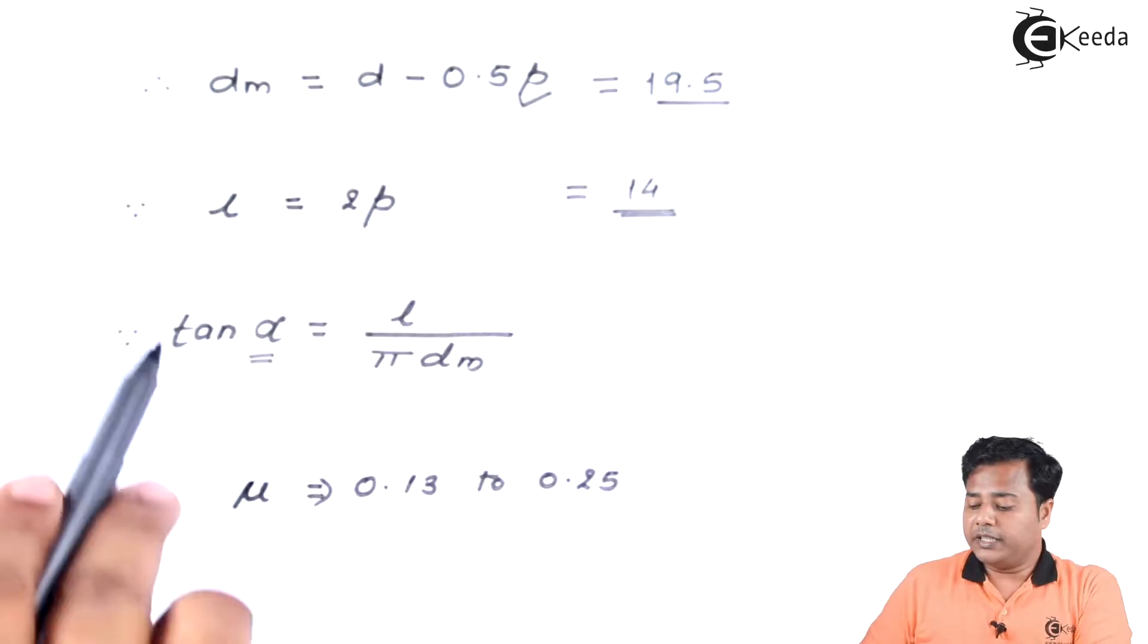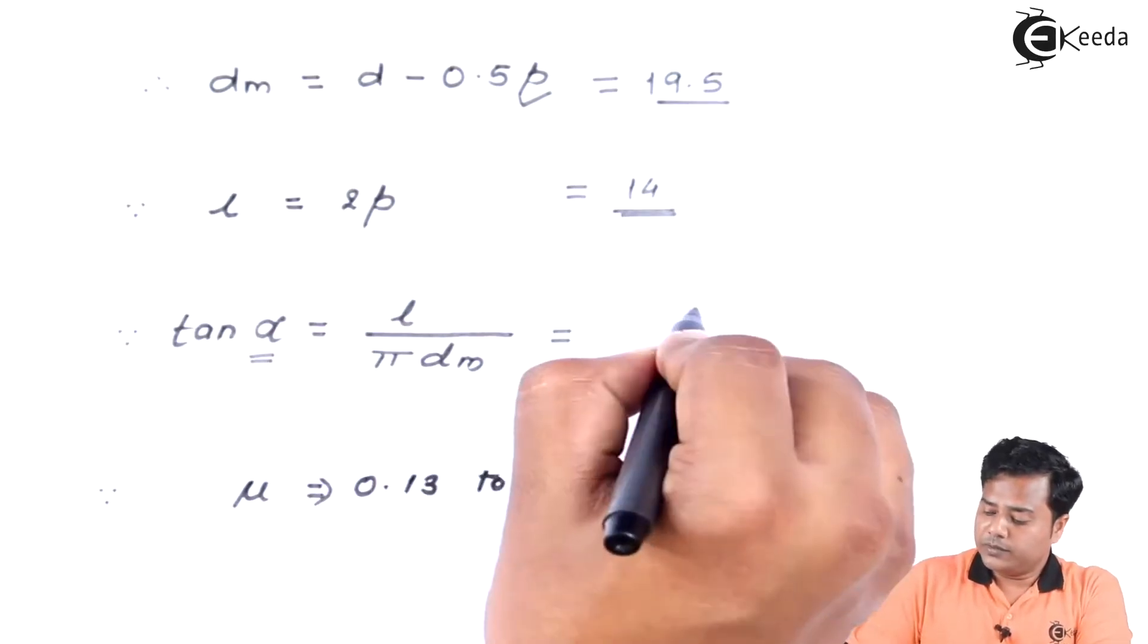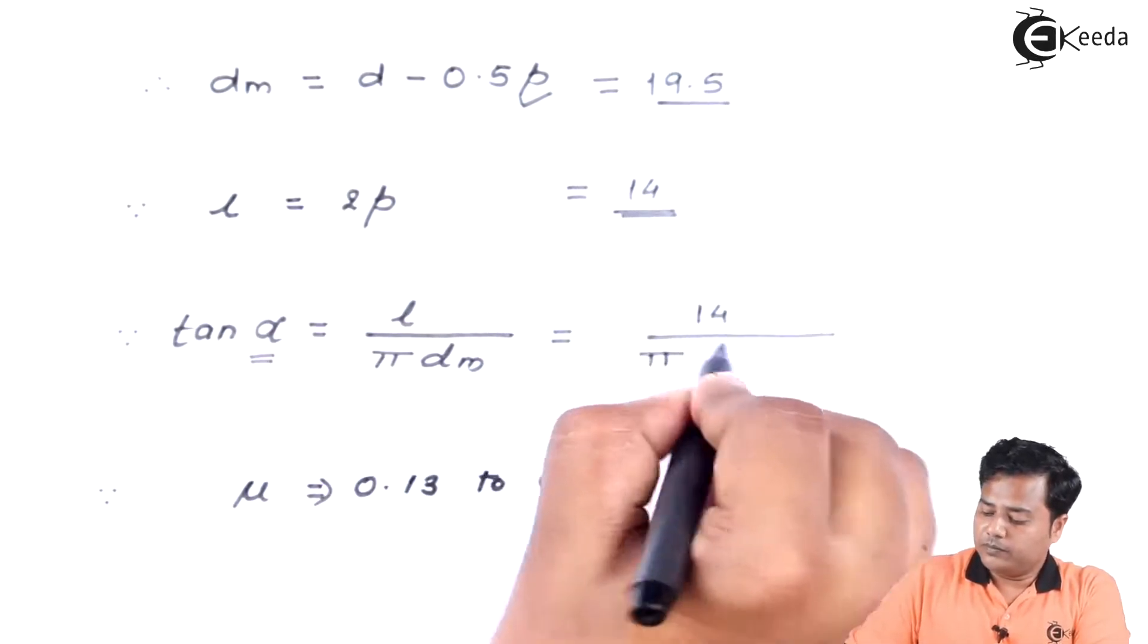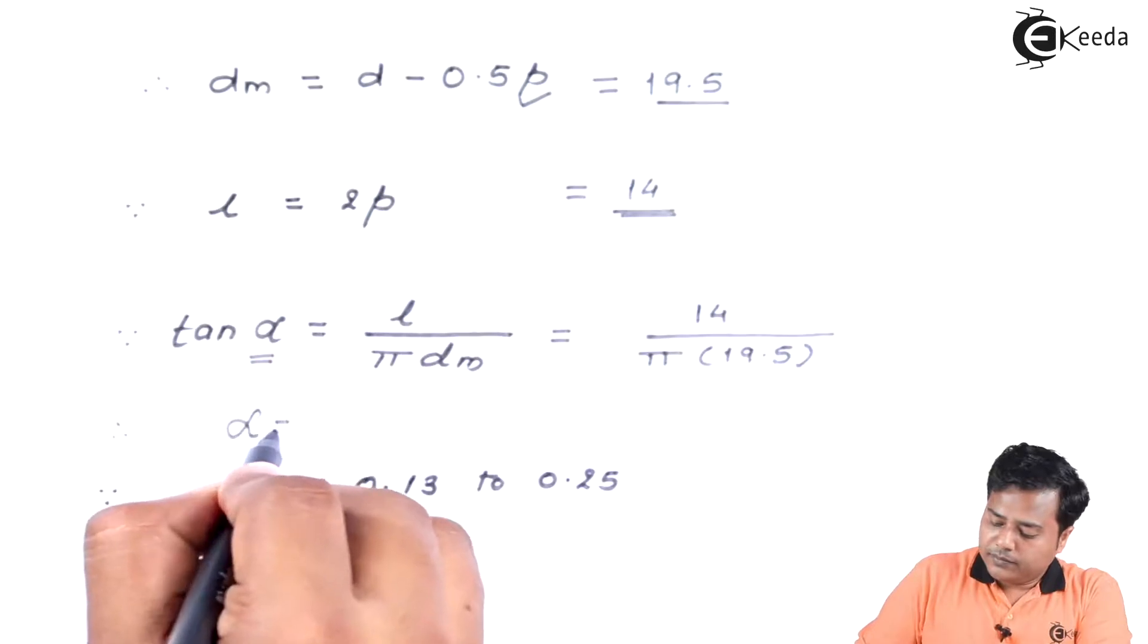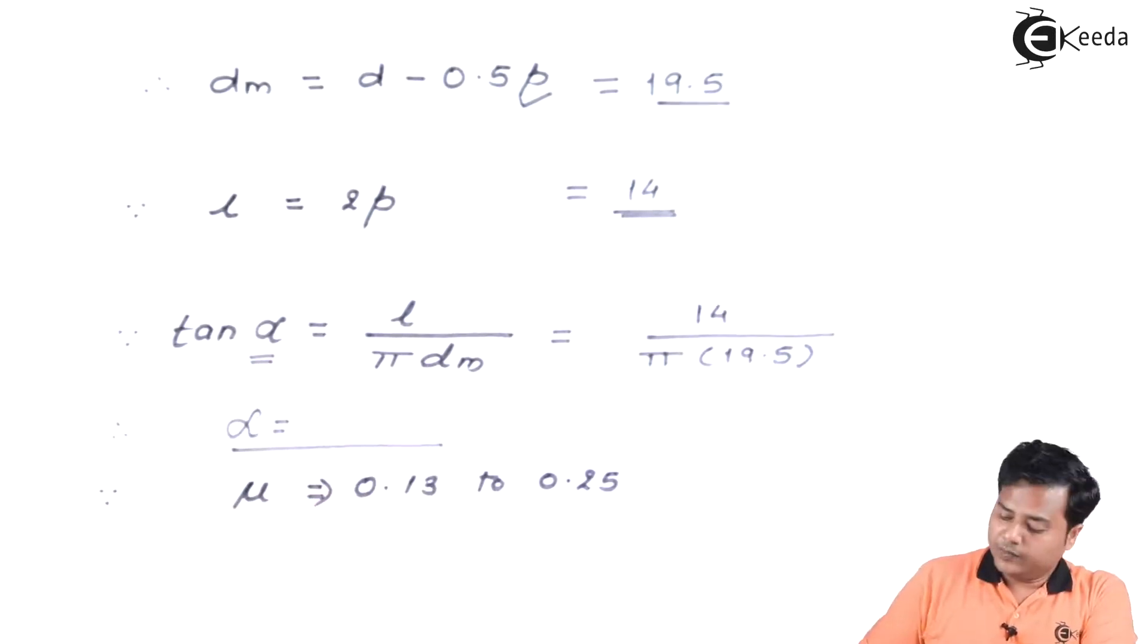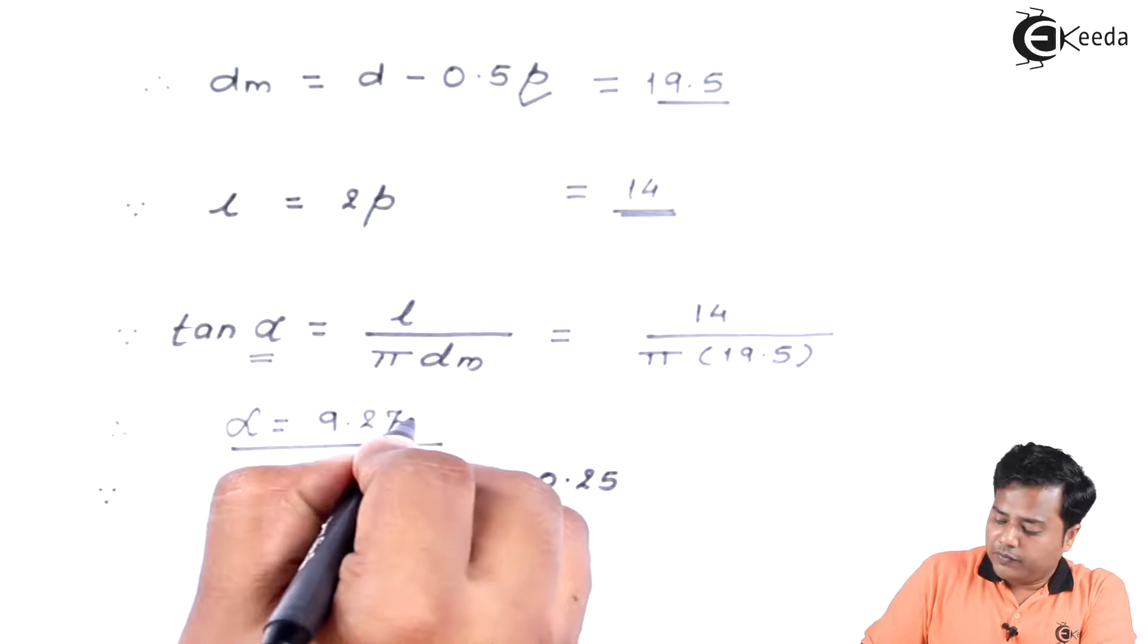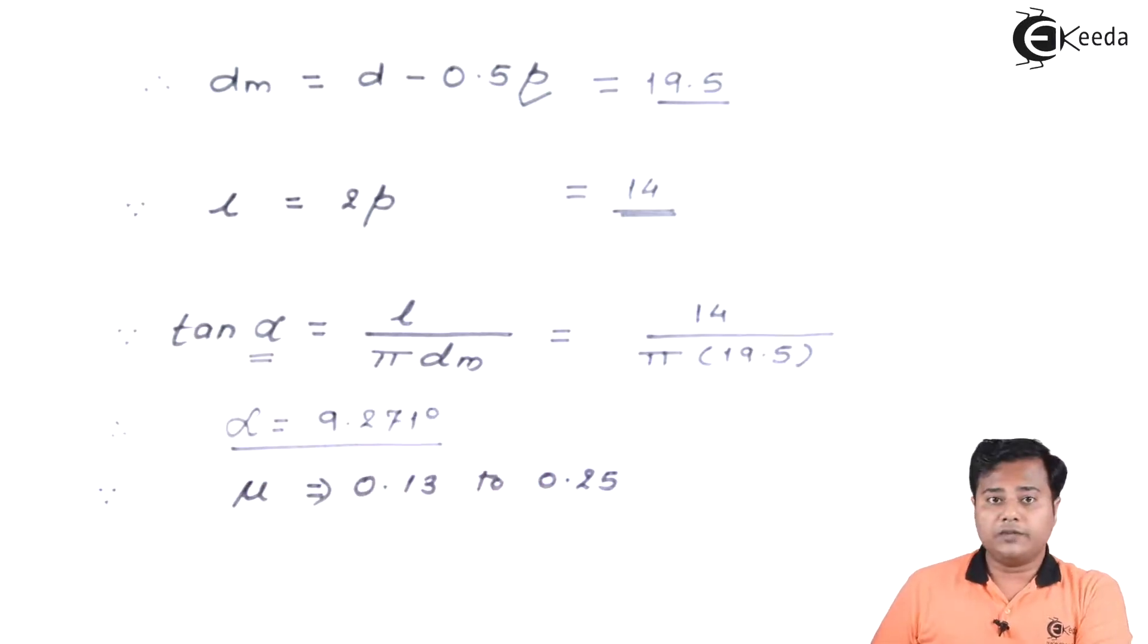The next important parameter that we need to find out is alpha. Alpha is given by this particular relation. Let us substitute the values. As we solve this relation, we will get value of alpha somewhere around 9.271 degree. This is our first finding.